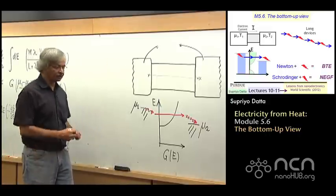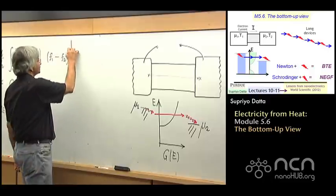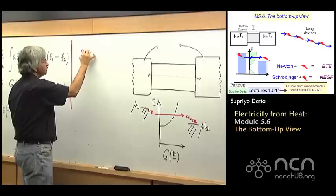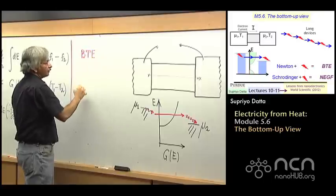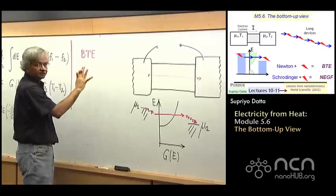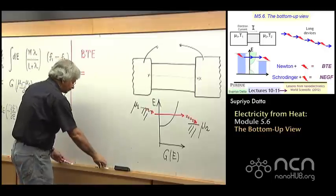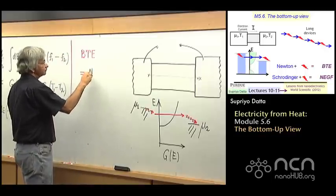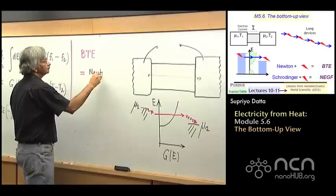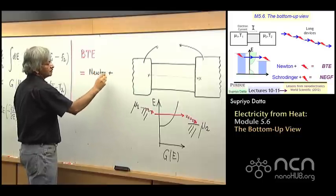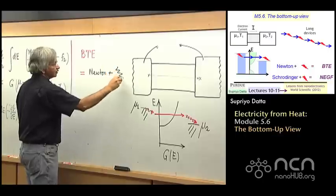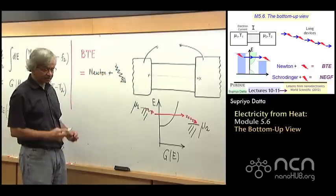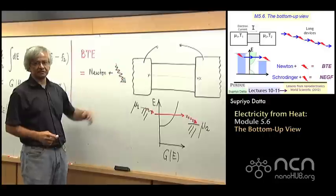One of the important equations of statistical mechanics, as I mentioned, is this Boltzmann Transport Equation, BTE, which roughly could be described as something that combines Newton's laws with scattering processes, processes that involve energy exchange, with energy exchange processes or entropy driven processes.